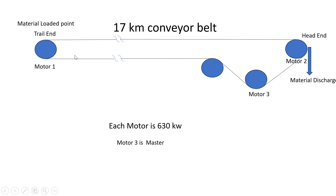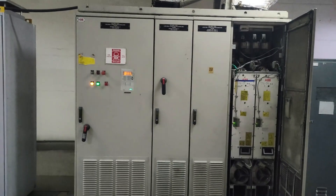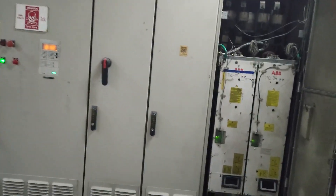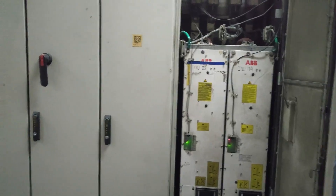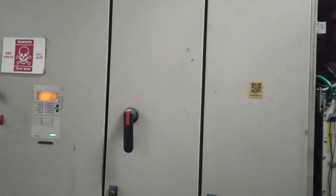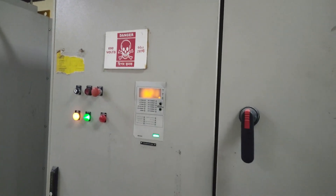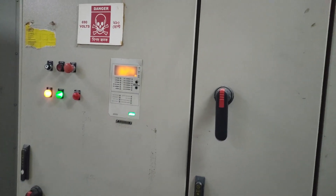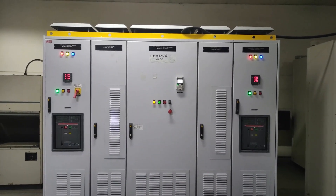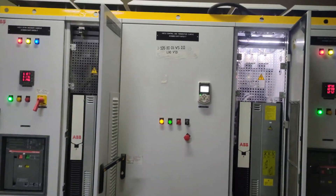Earlier, all three motors were run by the same series of drive, the ACS 800. But because of spare part availability, we replaced the Motor 2 drive with an ACS 880. So we have two old ACS 800 drives running Motor 1 and Motor 3, and the new ACS 880 drive running Motor 2. ABB engineering commissioned it last year and it was running fine. Recently we started facing the issue of Motor 1 and Motor 3 taking more current.